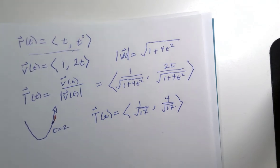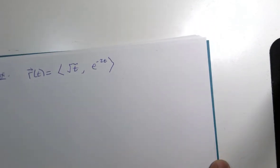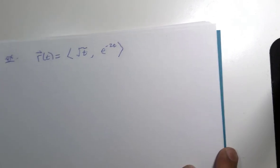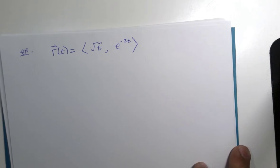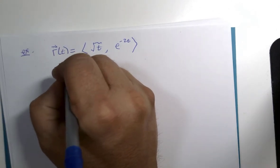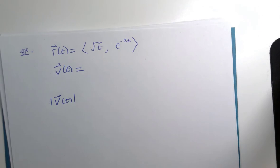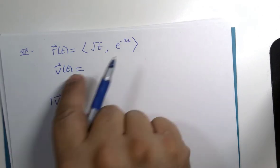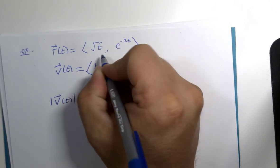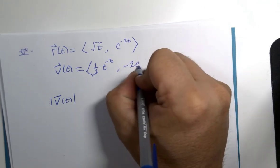One more example. This one will be without a sketch. We're not going to go through and plot the points in graph. We're just going to make sure we're exercising a few little calculus muscles while we're going through the calculation. We're going to need the velocity vector and its speed to run through this calculation. The first derivative would be 1 half multiplied by t to the negative half power, negative 2e to the negative 2t.